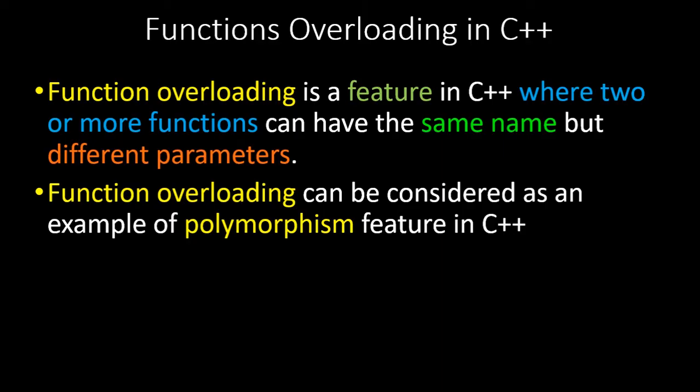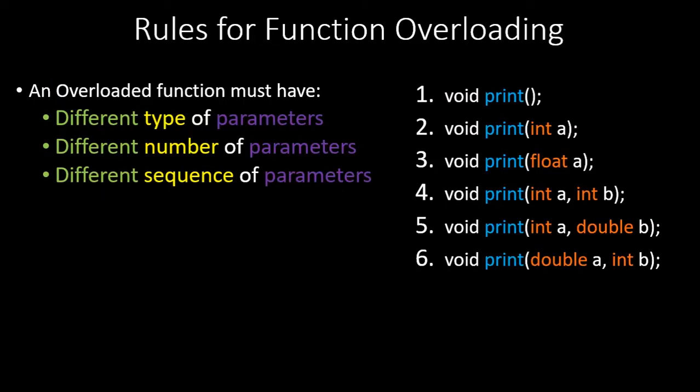The rules for overloading are as follows: an overloaded function must have a different type of parameters, referring to the data type; or a different number of parameters. If the data types and number of parameters are both the same, then the sequence of parameters should be different — for example, int and float versus float and int.